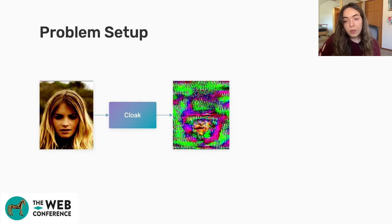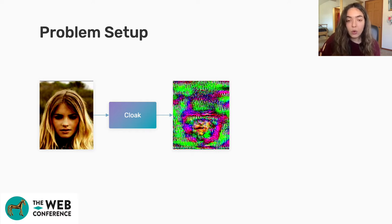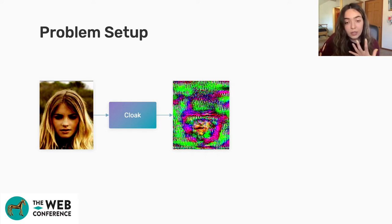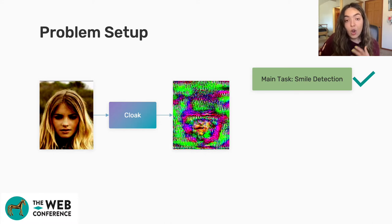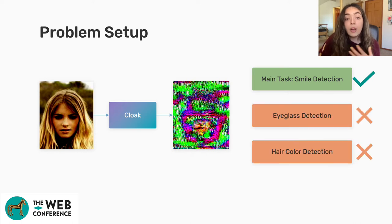To address this problem we propose Cloak, which is a method that finds the features that the deployed machine learning model uses to make its decisions and then discards the rest of the unrelated or non-essential features. For the smile detection task, when we apply Cloak the lip area related to the smile is visible but the rest of the features are discarded. A model for smile detection can still give the correct decision, but models trying to detect eyeglasses or hair color fail.